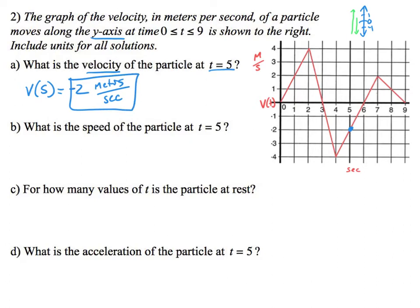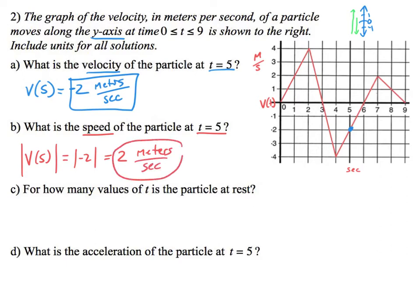Now I want the speed at t=5. The speed is different — speed doesn't care about direction. It still wants v of 5, but it wants the absolute value of v of 5. So we ignore the negative: the absolute value of negative 2 is 2 meters per second. Speed ignores negatives, which is what absolute value means, because speed doesn't care about direction but velocity does.